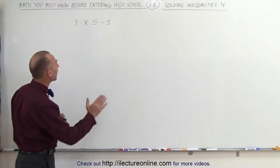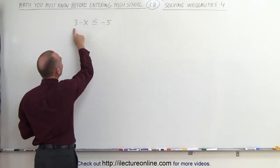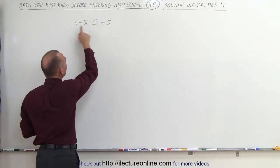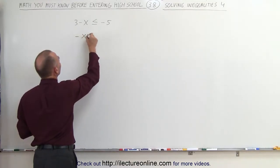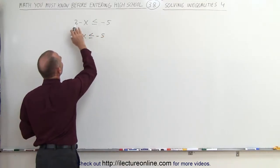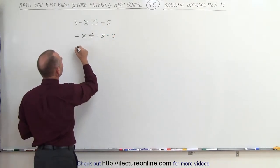We can solve that by isolating x on the left side, so we're going to move the 3 to the other side. And when we move the 3 to the other side of the inequality, it does change sign. Just like with equations, we get minus x less than or equal to minus 5, and the 3 to the other side becomes minus 3. And therefore we get minus x is less than or equal to minus 8.